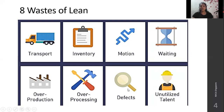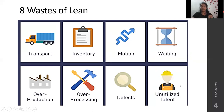Defects: Lean ensures that whatever is the output of the industry — whether a product or service — it is free of defects as much as possible. Unutilized talent: Lean makes sure that only skilled and qualified employees work under Lean processes. So these are the eight wastes of Lean.